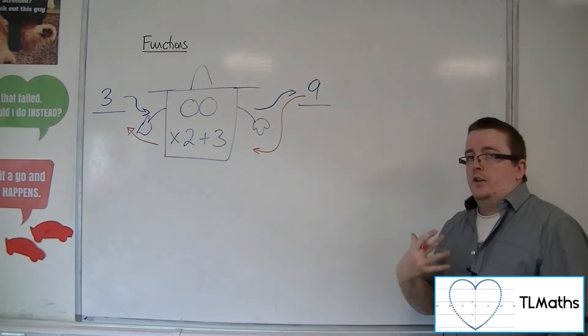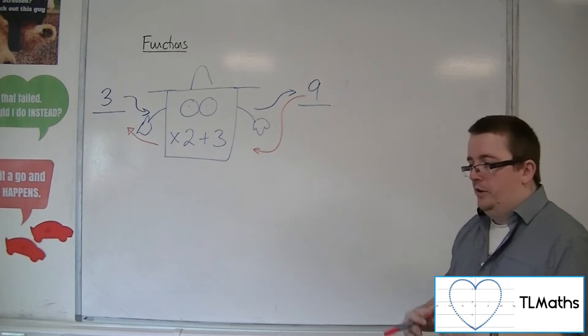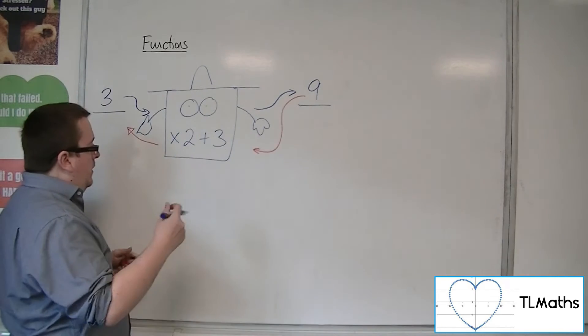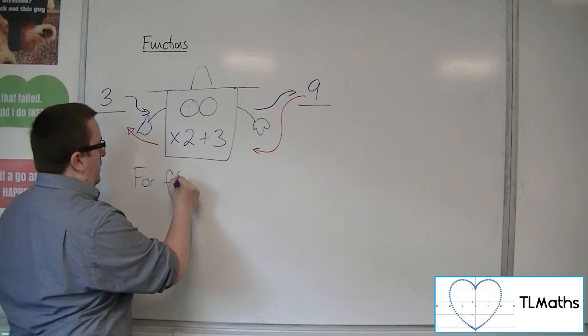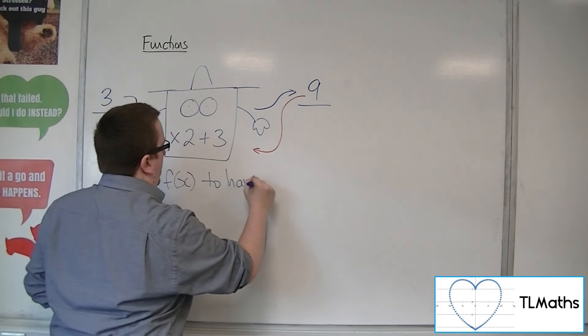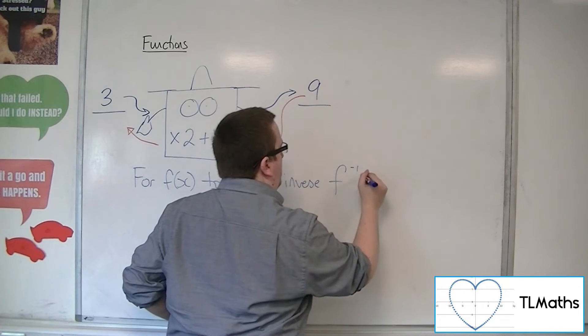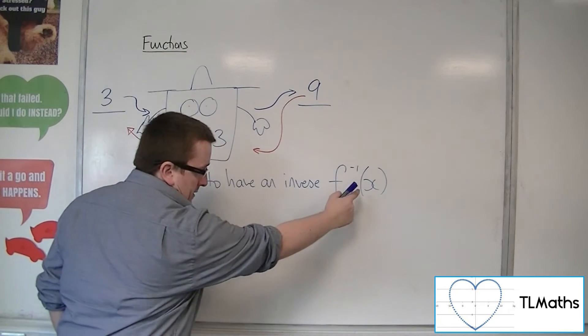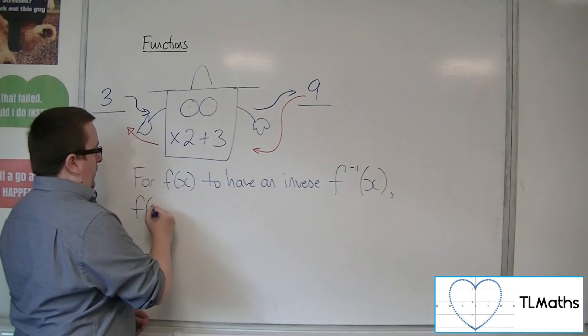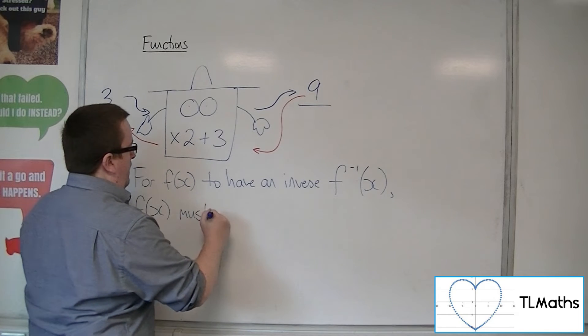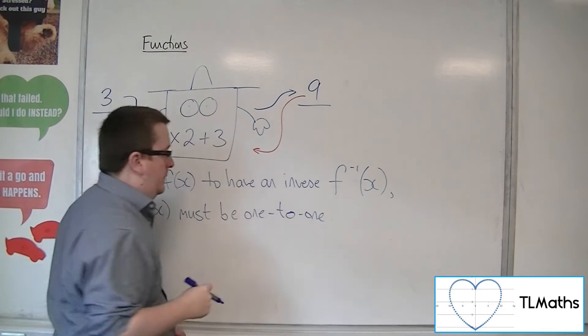So, that causes a dilemma. But, it is important for this piece to say that for f of x to have an inverse, which we will label as f minus 1 of x, and more on that in a moment, f of x must be 1 to 1.